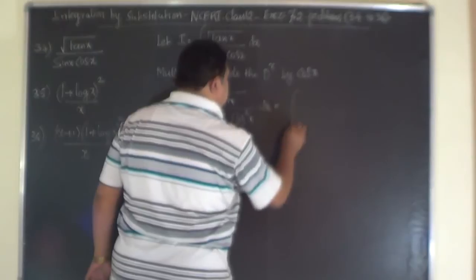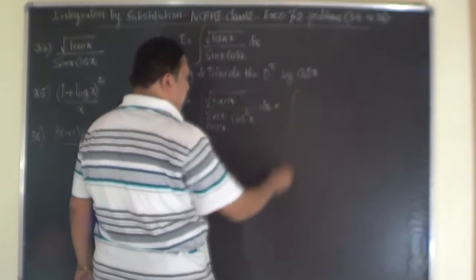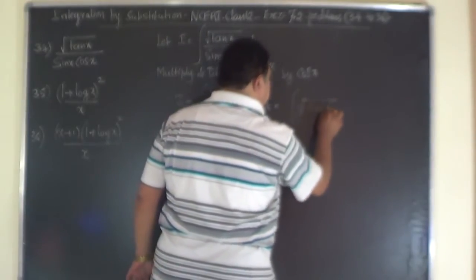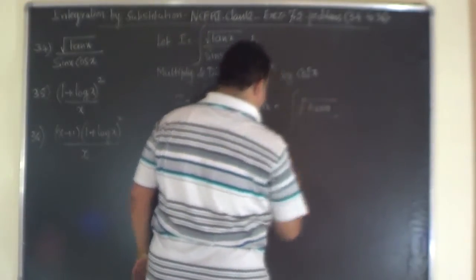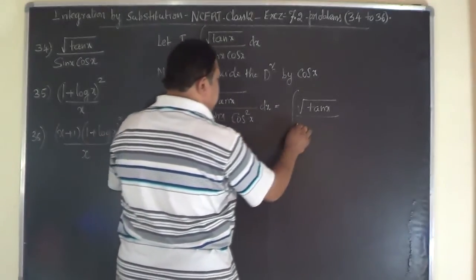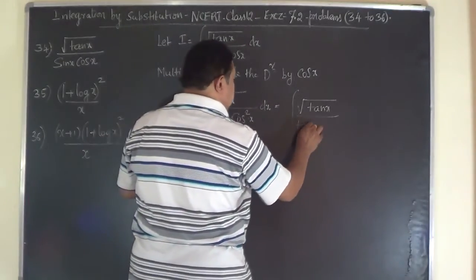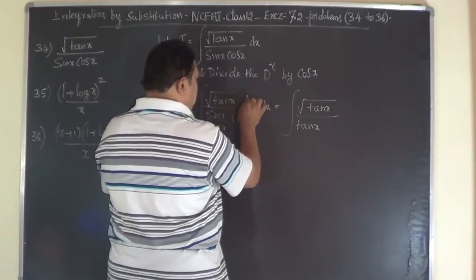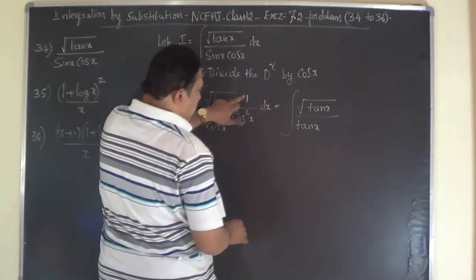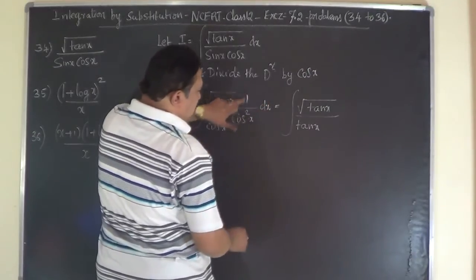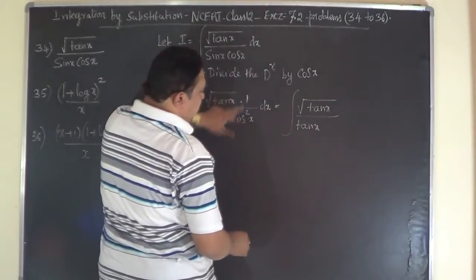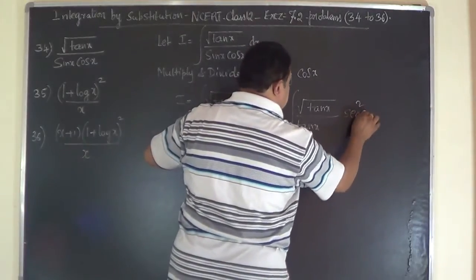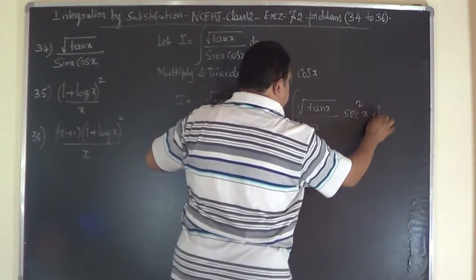This can be written as the integral of root tan x divided by sin x over cos x, which is tan x. And we also have 1 over cos x, which is sec²x, into dx.